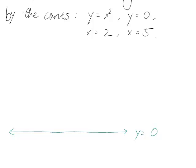x equals two is a vertical line at two, and x equals five is a vertical line at five.